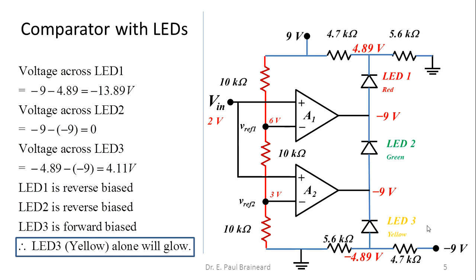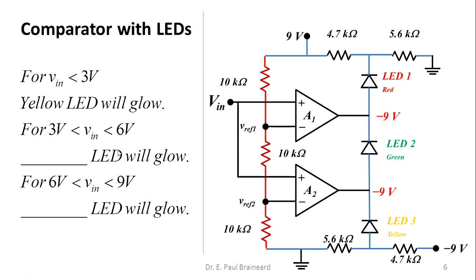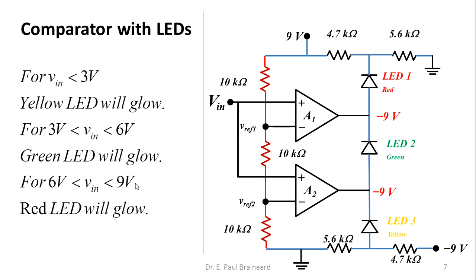Similarly, we can find the LED status for other input voltage ranges. If the input voltage is less than 3 volts, only the yellow LED will glow. If the input voltage is between 3 volts and 6 volts, the green LED will glow. If the input voltage is between 6 volts and 9 volts, the red LED will glow. Depending upon the input voltage magnitude compared against the reference voltages, only one particular LED will glow — this is called a 3-level comparator circuit with LEDs.